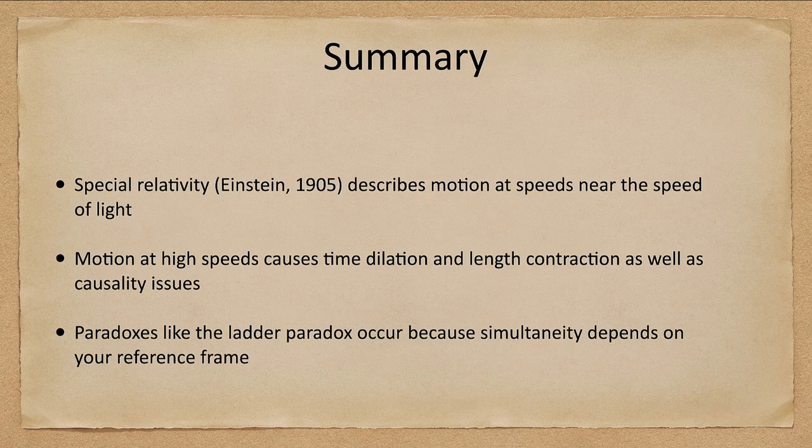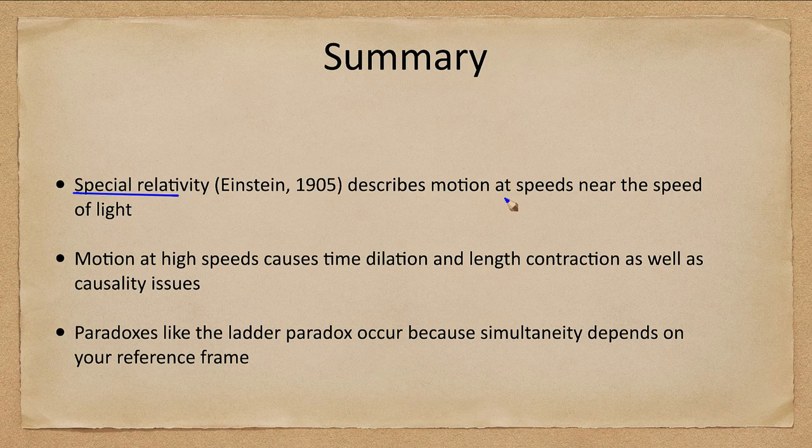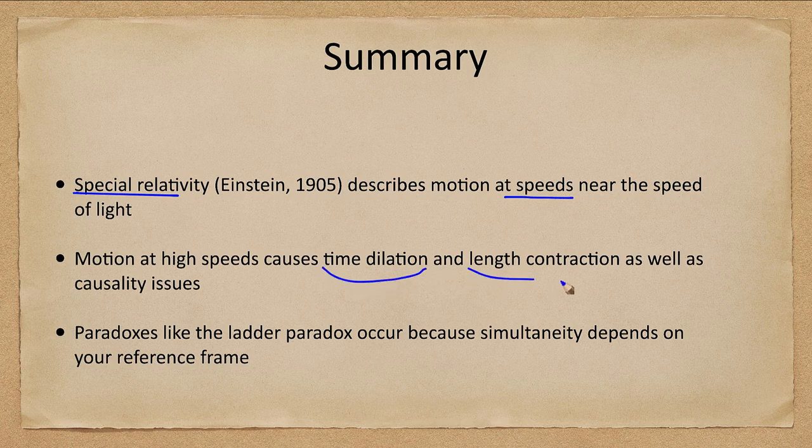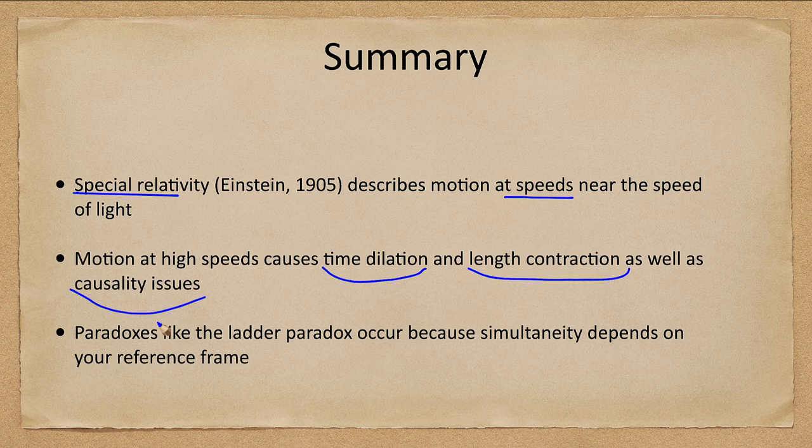Let's finish with our summary. Special relativity, given by Einstein, describes motion at speeds near the speed of light. This causes effects like time dilation and length contraction, as well as causality issues that must be considered.